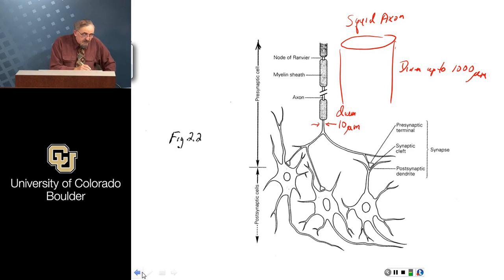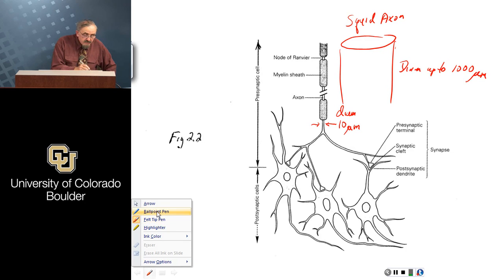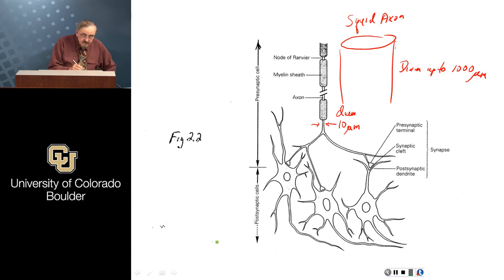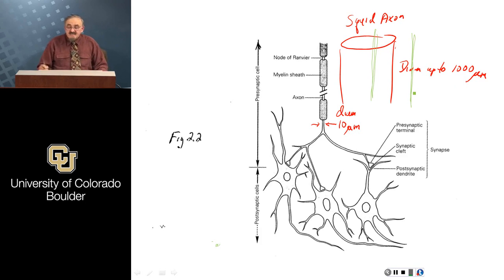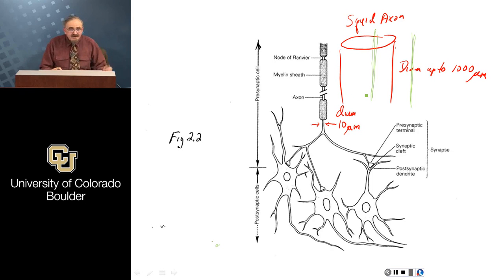With such a large axon, it's possible to actually stick a wire inside it. You can take a strip several centimeters long and put a thin wire down the middle — anything on the order of a fraction of a millimeter would suffice. Then you put a wire on the outside; it doesn't have to be right on the membrane, just somewhere in the fluid surrounding the axon. Nerve cells, including their axons, only operate in the proper liquid milieu — essentially the animal's own blood or something close to it.